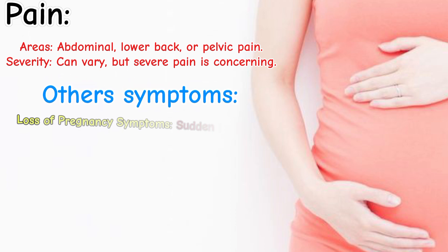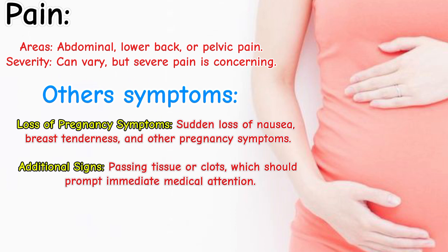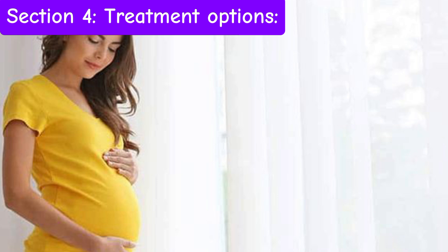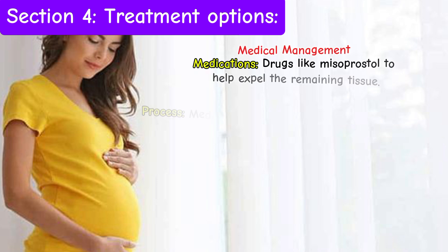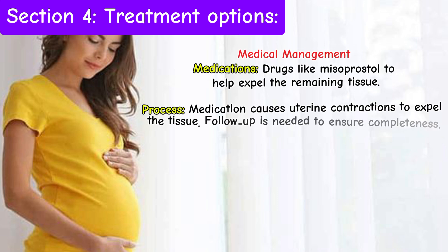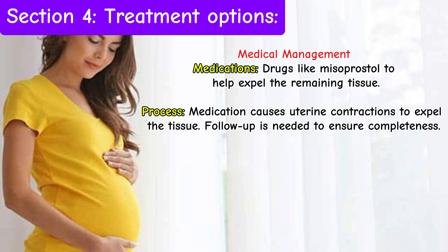Other symptoms include a sudden loss of pregnancy symptoms such as nausea and breast tenderness. Passing tissues or clots should prompt immediate medical attention. Section 4 — Treatment Options: Medical management uses medications like misoprostol to help expel the remaining tissue.